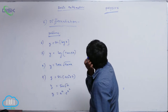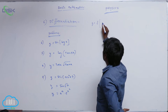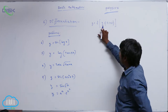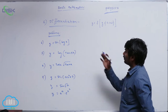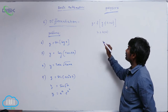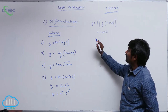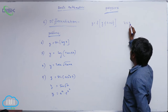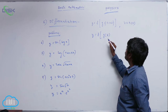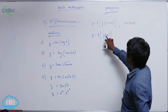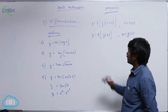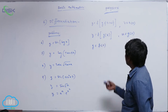Let me repeat the chain rule again. Suppose y is equal to f of g of h of x — one function is a function of another function. In that case we use chain rule. I will take v equal to h of x, so y becomes f of g of v. Then taking g of v as u, so u is equal to g of v, giving y equal to f of u.